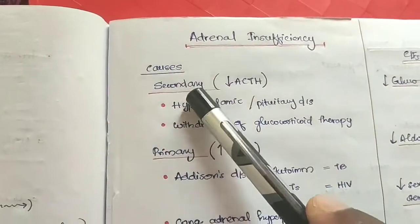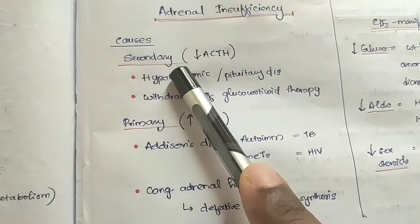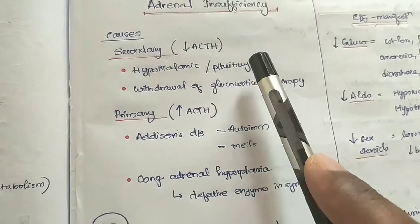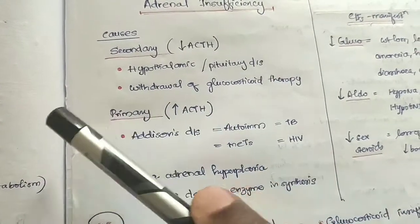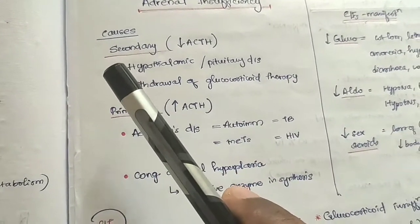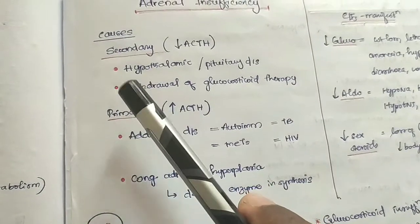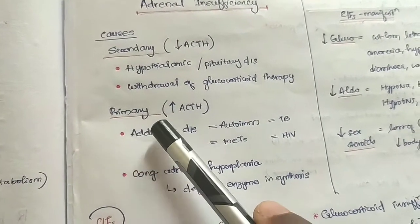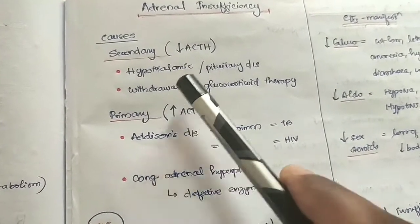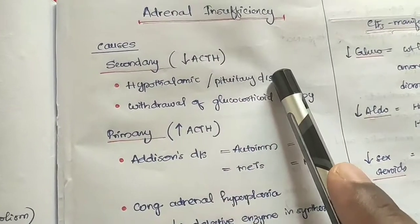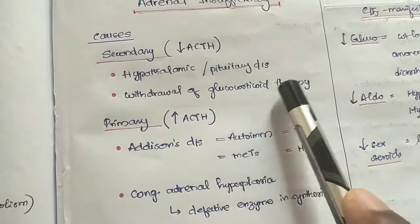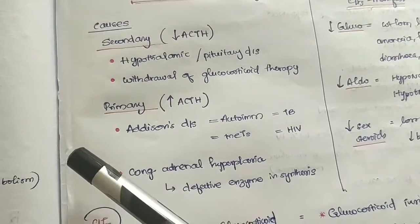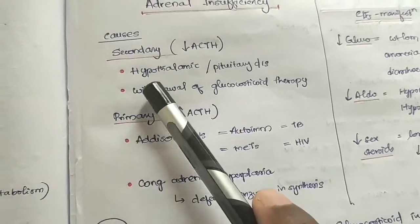Adrenal insufficiency is classified as secondary and primary. Secondary causes involve different ACTH levels. This is a hypothalamic and pituitary disease — where ACTH is produced by the hypothalamus-pituitary axis. One key secondary cause is the withdrawal of glucocorticoid therapy. If the patient is already on glucocorticoid therapy and it is suddenly stopped, this sends the adrenal gland into insufficiency, and adrenal insufficiency will manifest.